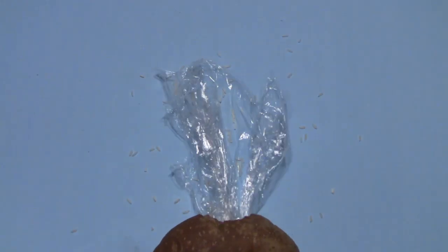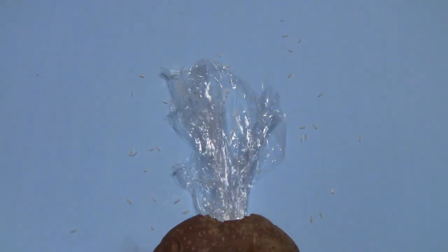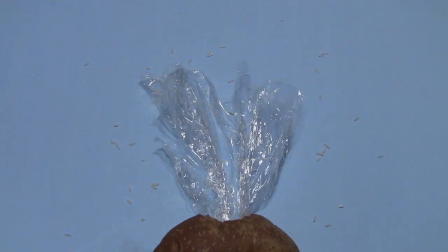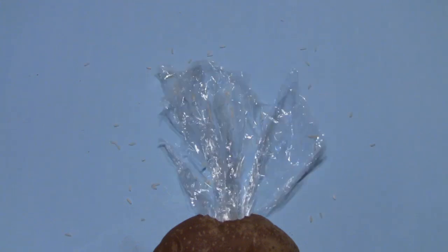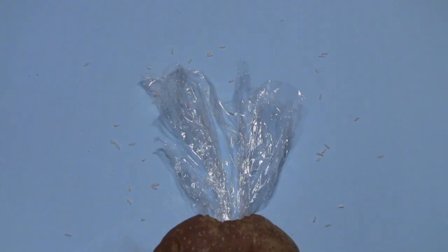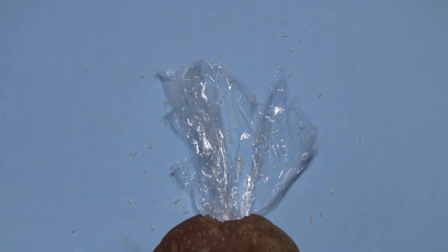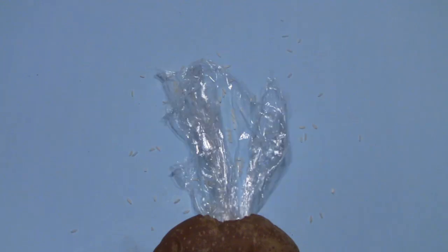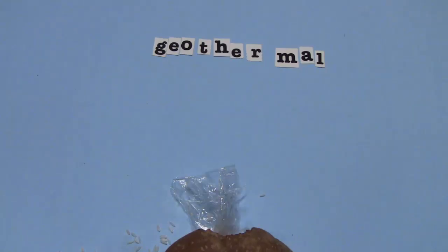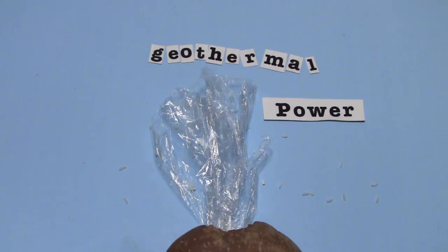Geysers result from water being superheated by magma at the Earth's core. The Earth's core constantly produces thermal heat energy. Whatever thermal energy we transform into electricity won't put a dent in the core's temperature. That heat is continually replaced. This is why geothermal power is derived from a renewable energy source.